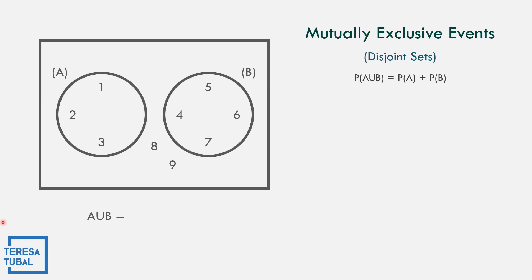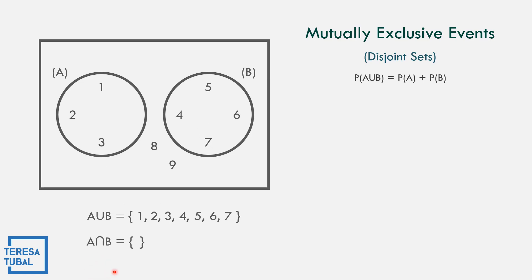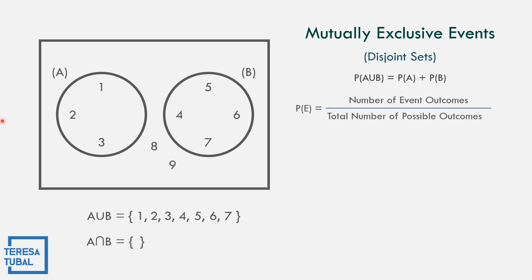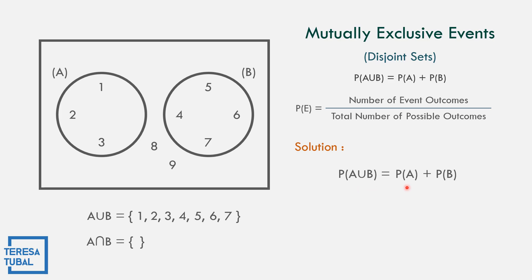Let us get A union B. For event A we have 1, 2, 3; for event B we have 4, 5, 6, 7. So A union B is 1, 2, 3, 4, 5, 6, 7. The A intersection B — as you can see there is no overlapping, so A intersection B is an empty set. The formula P(A union B) equals P(A) plus P(B) is applicable when the given event is mutually exclusive — that is, disjoint sets as shown in the Venn diagram.